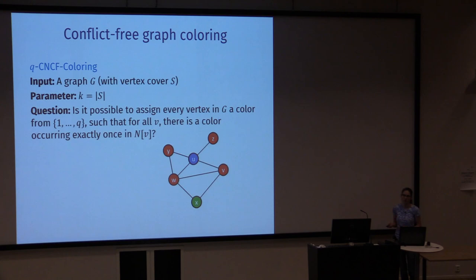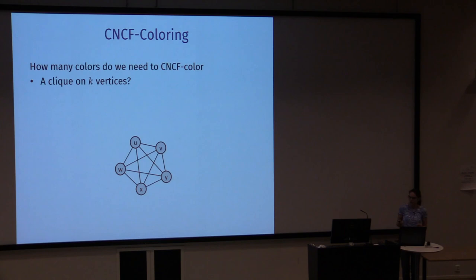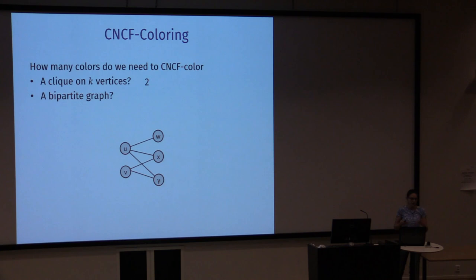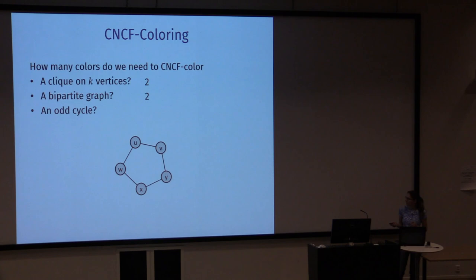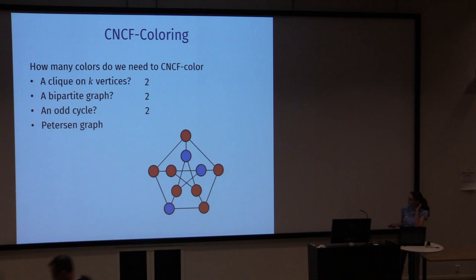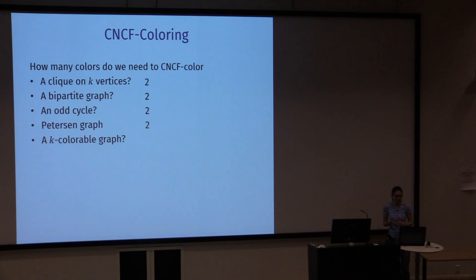Let's get a feel for this problem. To CNCF colour a clique, we can do this with only two colours by colouring one vertex blue and all others red — then everybody sees exactly one blue vertex. For a bipartite graph, two colours also suffice because every vertex will have itself as its conflict-free colour. For an odd cycle, you pick two neighbours with the same colour and alternate on the others. And in particular, if you have a K-colourable graph, you can CNCF colour it with K colours using the same colouring, since every vertex will see a colour different from all its neighbours.